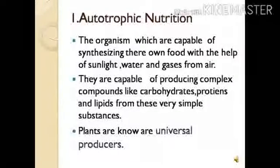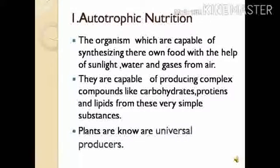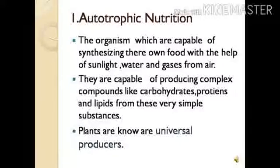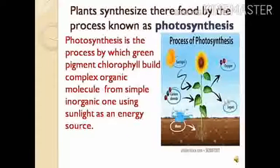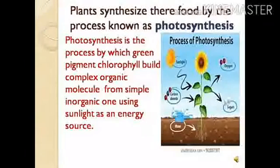Plants are universal producers because they carry out the process known as photosynthesis, using sunlight, water, and gases from the air to prepare food. Scientists like Van Helmont believed that plants get food material not only from the soil but are capable of using other sources apart from the soil to prepare food.